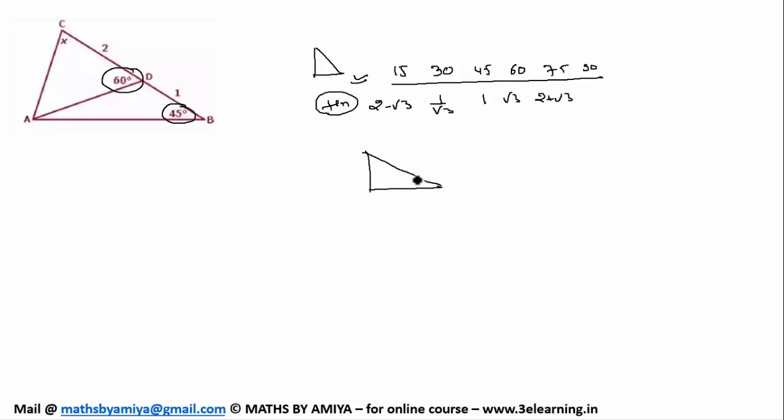The second thing I am going to use is if you have 60 degree and 30 degree and 90 degree, if in front of 30, if it's 1, in front of 60, it must be root 3. That is 1, 2 and root 3 combination. If we have 45, 45, we have 1, 1 and root 2. So I am going to use 1, 2, root 3, 1, 1, root 2 combination in this and one small ratio concept.